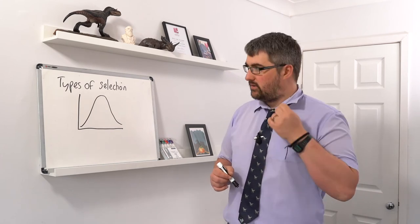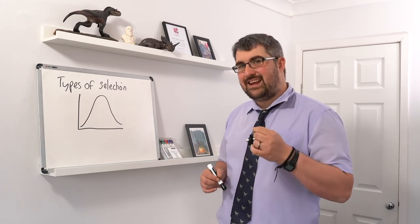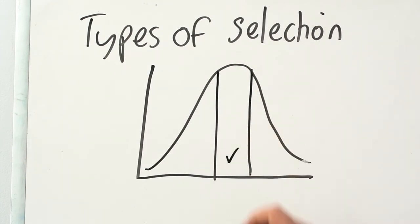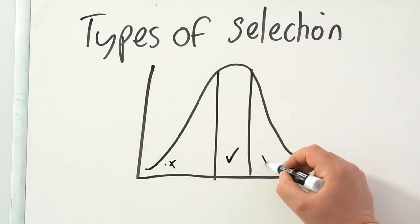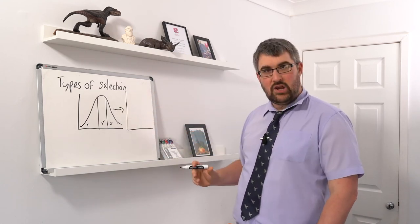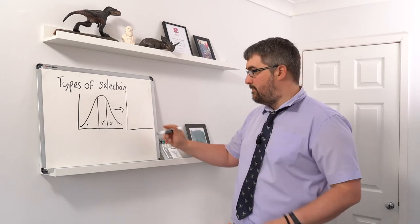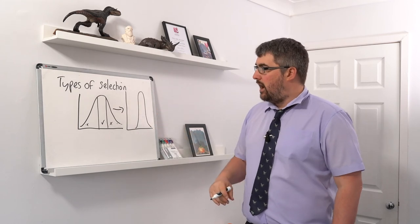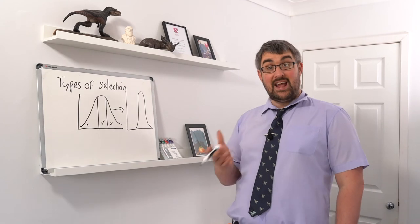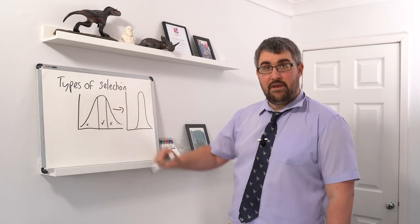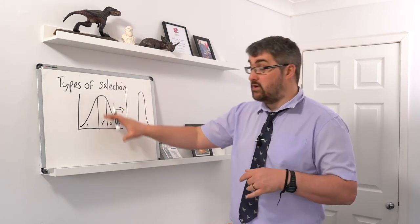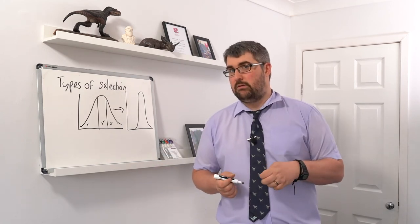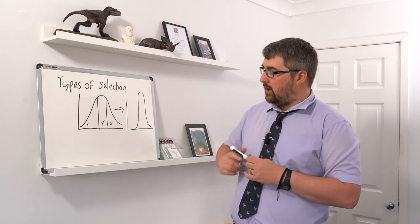In stabilizing selection, the mean individuals — the most common in the population — are selected for, while the two extremes are selected against. The result is that the normal distribution becomes narrower and more constricted. We see stabilizing selection when the environment is stable: individuals with alleles suited to that environment survive, while those with more extreme variation tend not to do as well.